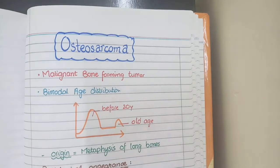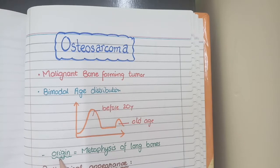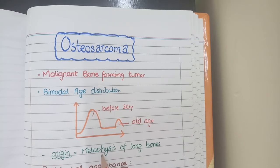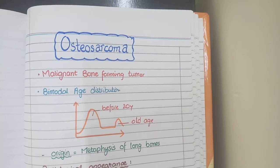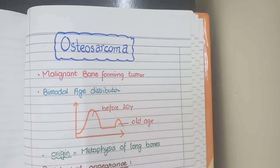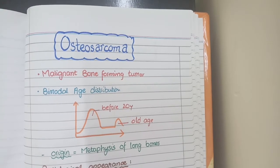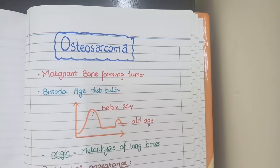As far as the origin of osteosarcomas is concerned, they originate from the metaphysis of long bones. The metaphysis is the region present between the end of long bones and the shaft of long bones.